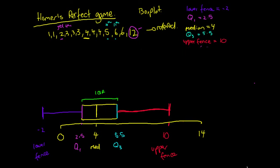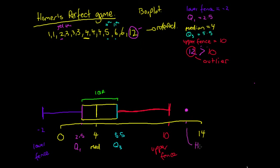With our box plot we also need to test for outliers. Our upper fence tells us where data stops being regular — any data above 10 is an outlier. Looking at this observation, 12, that's Homer's perfect game. Not many people bowl a perfect game so it actually is an outlier — it's very infrequent and not consistent with our data. Since Homer's 12 is greater than our upper fence of 10, we can say it's an outlier, and we plot it as a dot outside our data.